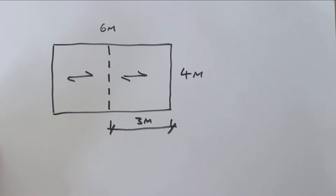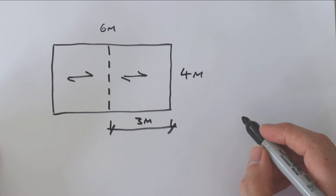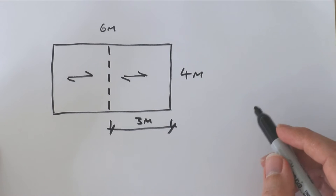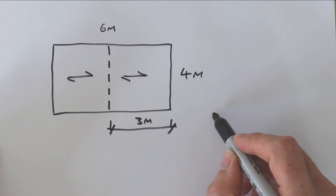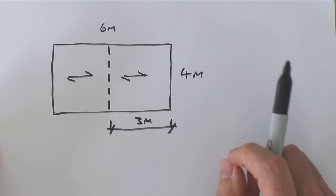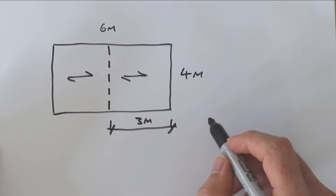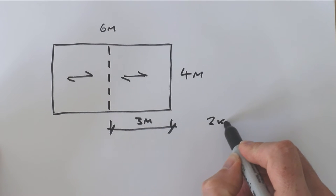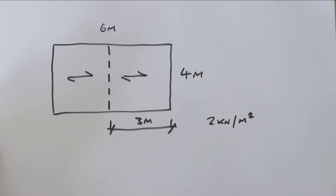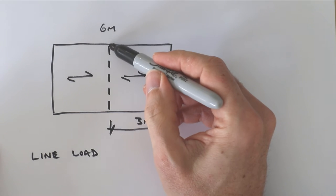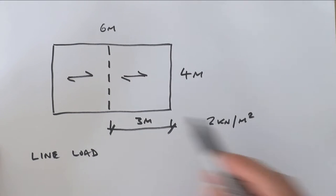The first thing to do is to look at what our loadings are going to be. Just for the purposes of this calculation, I'm going to say that the factored load—that's the load after we've applied a load factor to it—is two kilonewtons per square meter on that roof. So what's the line load going to be, which is the load that goes along the line of that beam?